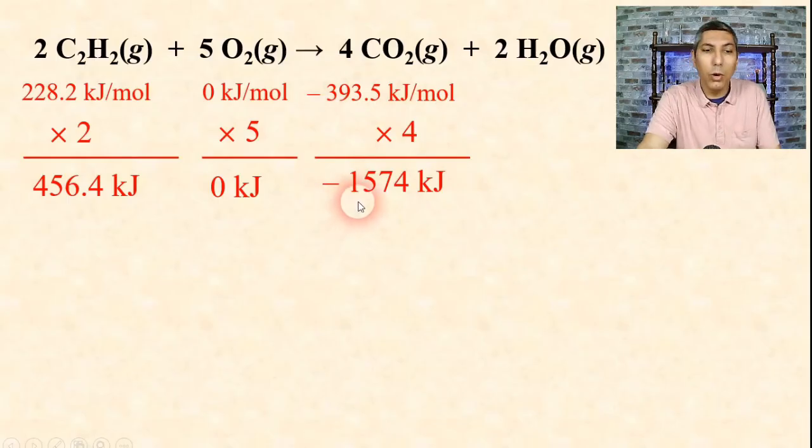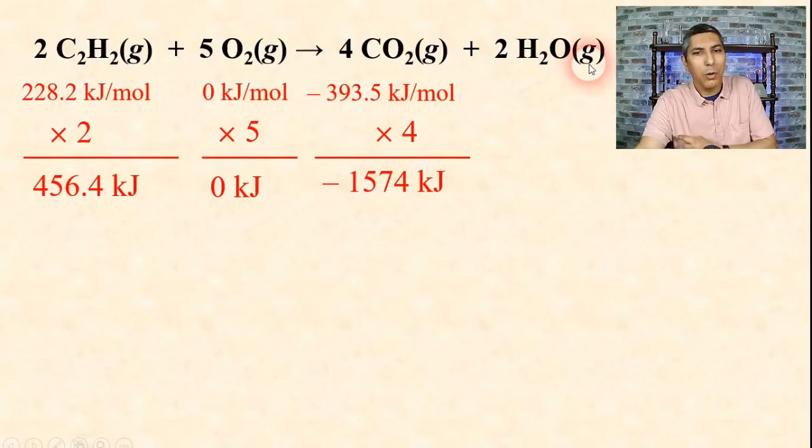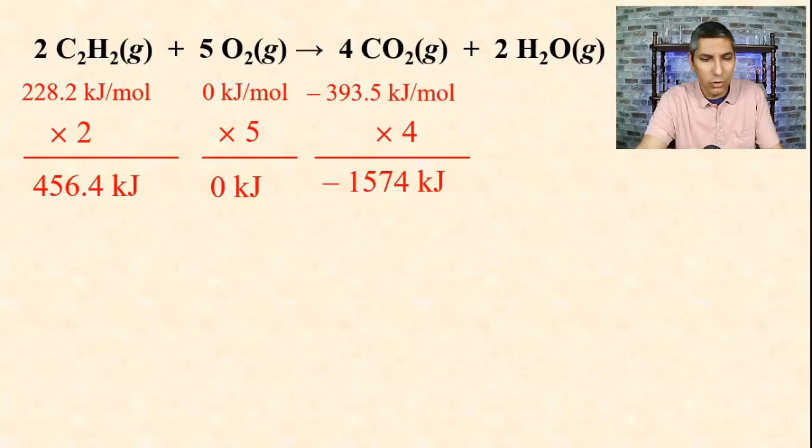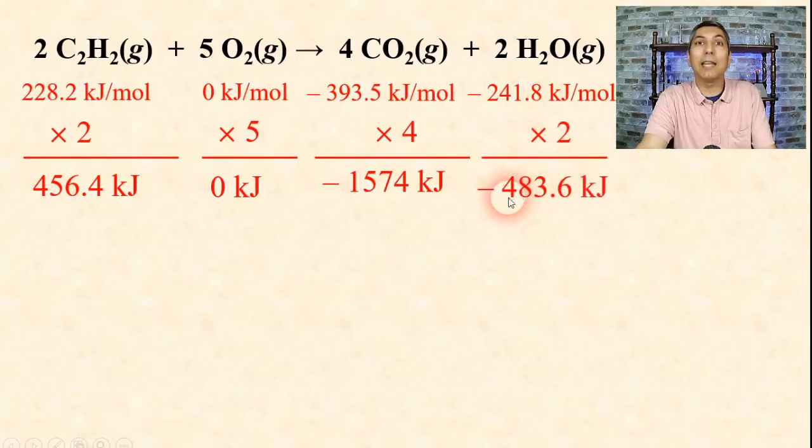Lastly, we have water. Notice this is water in its gaseous form. In the last example, we had water in its liquid form, so be careful not to use the wrong value on the chart. The enthalpy of formation of water in its gaseous form, or water vapor, is negative 241.8 kilojoules per mole. We have 2 moles of that, so we times it by 2. That's negative 483.6 kilojoules.